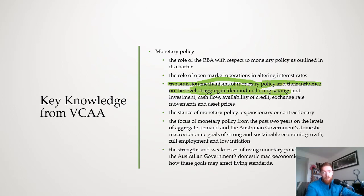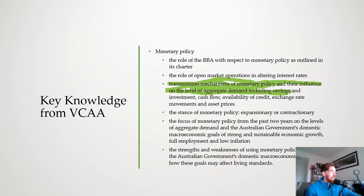VCAA loves to have a question at the end of your exam asking you to use one or two transmission mechanisms to explain the effects of the recent RBA decision on economic activity. You've got to talk about one or two of the transmission mechanisms and the flow of how they affect the economy overall.